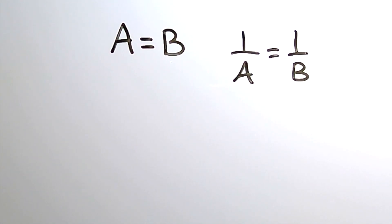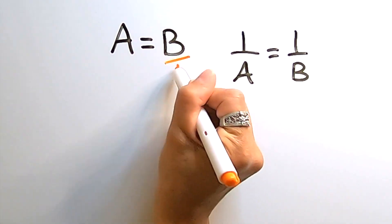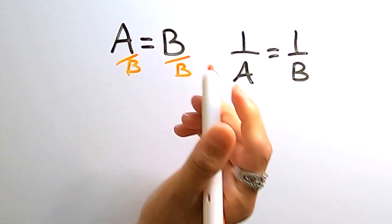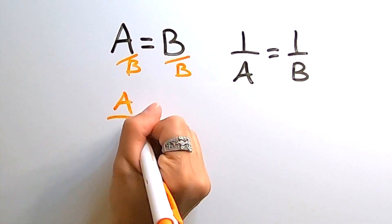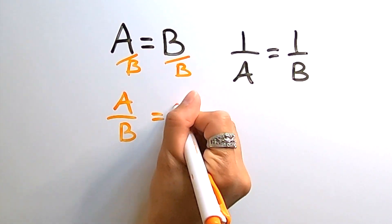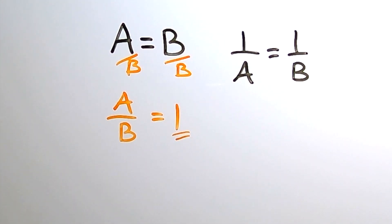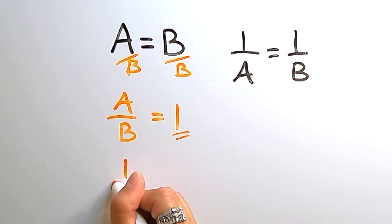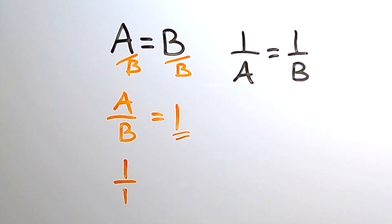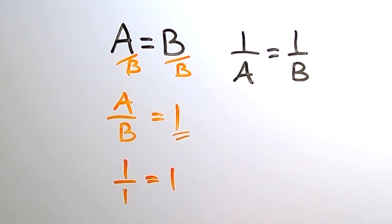To demonstrate the direct relationship between these two variables, I'm going to get both variables to the same side of the equal sign. I have to do that by dividing by b on both sides, and then I get a over b is equal to 1. Suppose I want to keep this 1 constant, meaning I do not want it to change — I want it to stay at 1. Suppose a equals 1 and b also equals 1. Well, 1 over 1 is equal to 1.